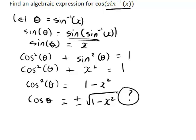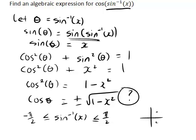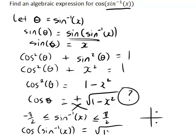Now, this is where it is worth thinking about what we're looking at. We are looking at cos of inverse sine x, and inverse sine x only takes a range of values between −π/2 and π/2. In those quadrants, cos theta is the x-coordinate of a point on a unit circle and is always positive. Therefore, we can eliminate the negative alternative and say that cos of inverse sine of x must simply equal the positive square root of 1 minus x squared.